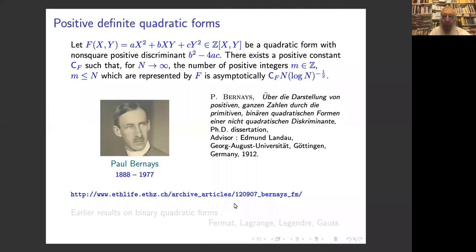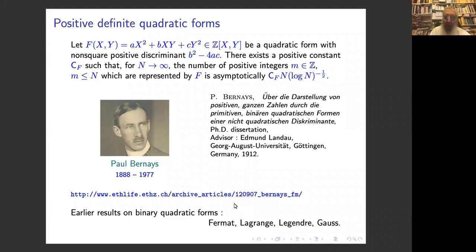This was published in 1912 as a PhD dissertation of Bernays done under Edmund Landau. To a certain extent we can say this is the conclusion of work started with Fermat and pursued with Lagrange, Legendre, and Gauss. Bernays is an interesting character — he worked with Pólya, Einstein, Hermann Weyl, Hilbert, Noether, van der Waerden, and Herbrand. He is known for the Hilbert-Bernays paradox, published in the book with David Hilbert, Grundlagen der Mathematik, and also for the von Neumann–Bernays–Gödel set theory.